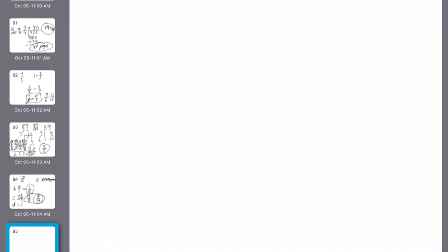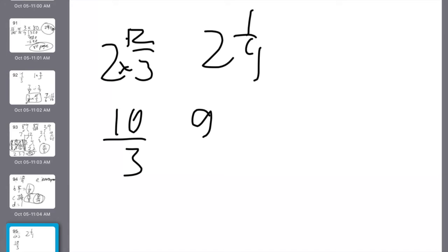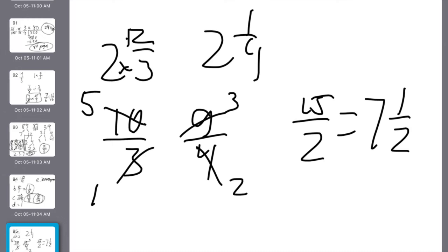Number 13. Write two and two-thirds and two and one-fourths as improper. Two and two-thirds multiplied and added is eight, nine, ten over three. Two and one-fourths, eight plus one is nine over four. Then find the product of the improper. I'm going to take three into three once. Three into nine three times. Divide by two. Divide by two. Multiply the tops. Multiply the bottoms. Switch to a mixed number. Seven and one half.